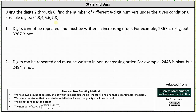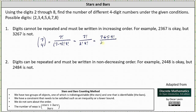And therefore, there are seven choose four different four-digit numbers in which the digits cannot be repeated and must be written in increasing order. And seven choose four is equal to seven factorial divided by the product of seven minus four factorial and four factorial, which is equal to seven factorial divided by the product of three factorial and four factorial, which is equal to seven times six times five times four factorial divided by three times two times one times four factorial.